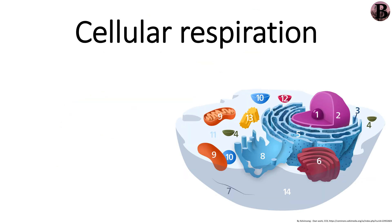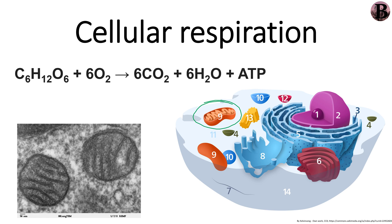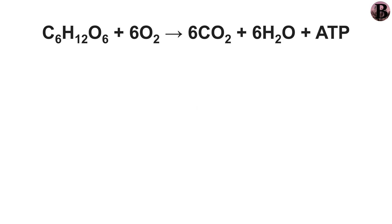All the magic, also known as the production of energy, happens in mitochondria. Mitochondria produce energy through the process of cellular respiration. For this reaction to happen, we need not only glucose, but also oxygen.